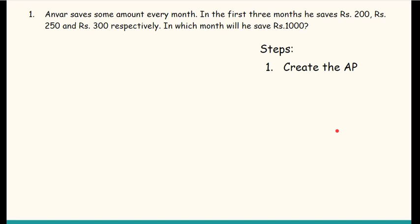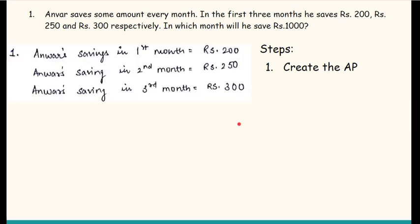Once you have written down the question, please write down the steps also one by one. To solve any AP question, our first task is to create the AP. In this question, his savings for 3 months have been given: 200, 250, 300. This means my AP is formed: 200, 250, 300, 350, 400 and so on.